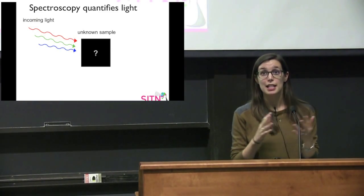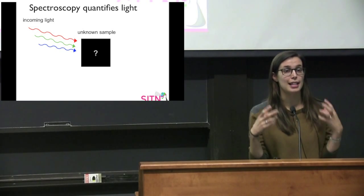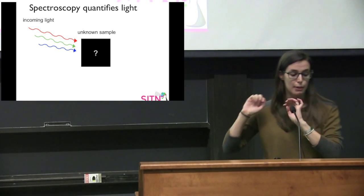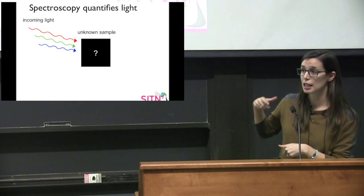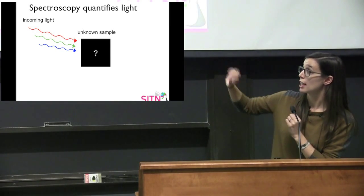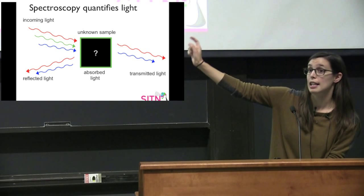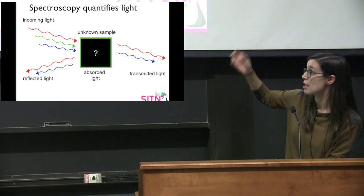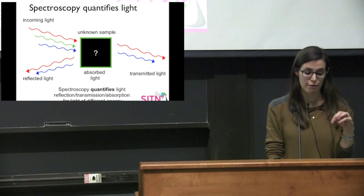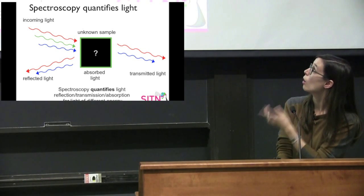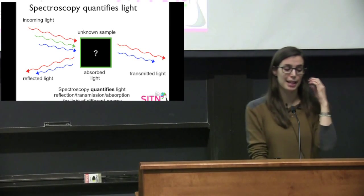The next technique I want to talk about is spectroscopy. Basically, all spectroscopy is a way of quantifying light and quantifying the energy of the light that gets absorbed. At its essence: you have some sort of light that comes in to an unknown sample, the sample absorbs some of the light, reflects some of the light, and some of the light passes through if the sample is thin enough. The energy of the light that gets reflected and the energy of the light that passes through is the same, and the absorbed light is different. With spectroscopy, we can quantify the light that gets reflected or transmitted and therefore determine what light got absorbed.